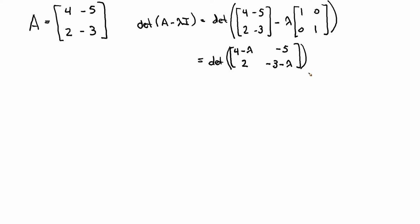Now what's the determinant of a two by two matrix? Remember my X, right? So it's this guy times that guy minus this times that guy. So four minus lambda, minus three minus lambda, minus minus five times two. And if you work, you know, if you multiply all that out, you get this thing. Lambda squared minus lambda minus two. That thing is called the characteristic polynomial. It's the characteristic polynomial of A.